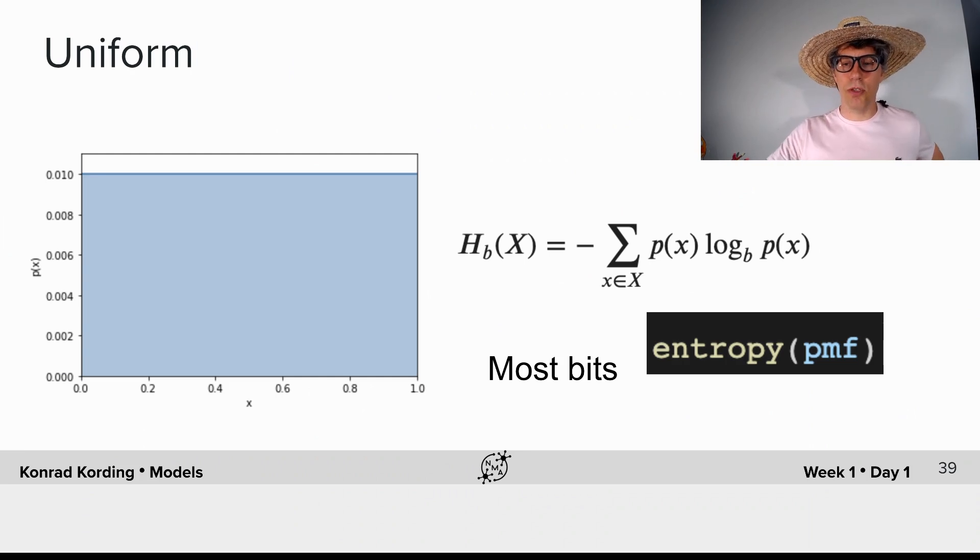And of course, if we have a uniform distribution, we will get more bits. In fact, we will get most bits. So it's time for you to implement the entropy function.